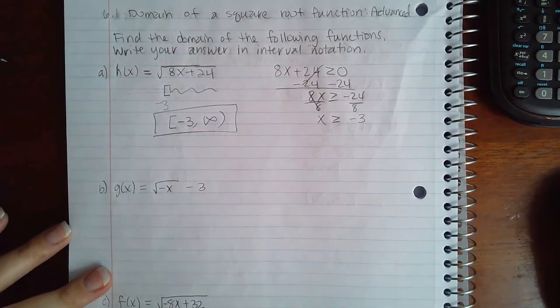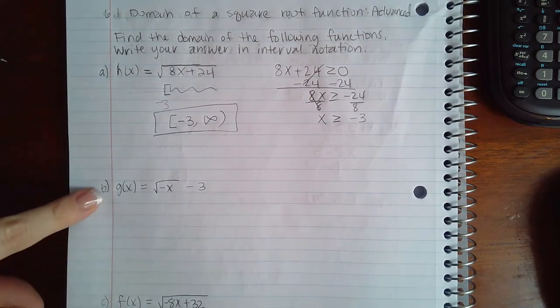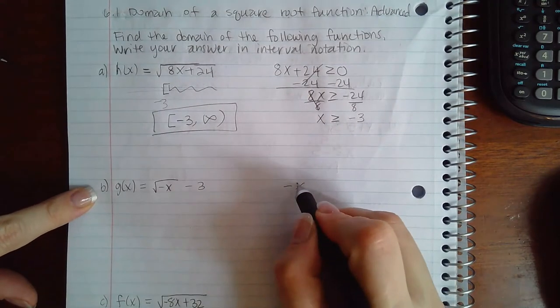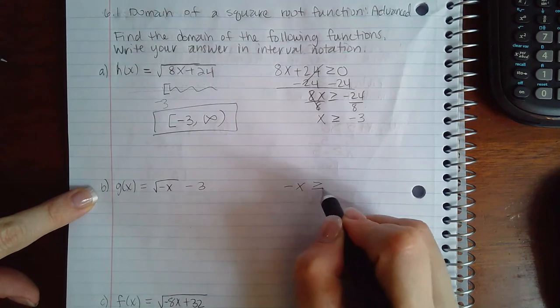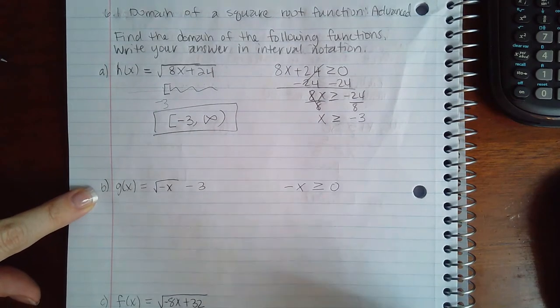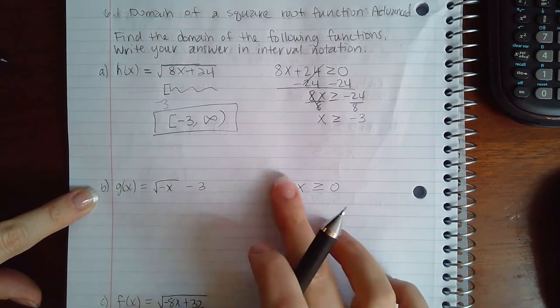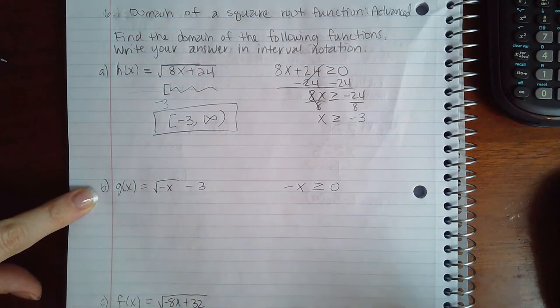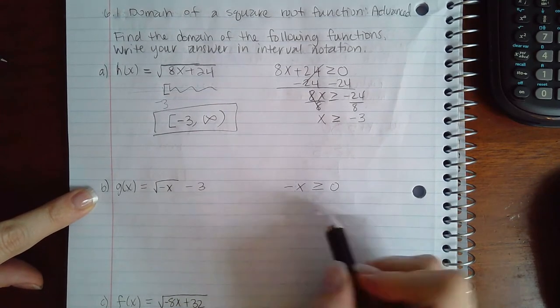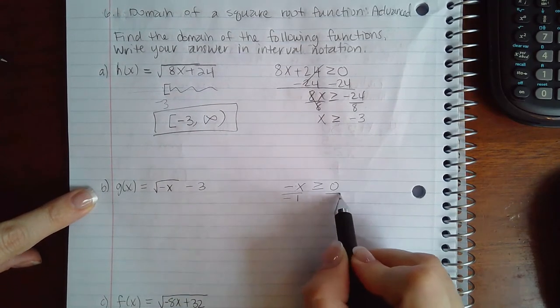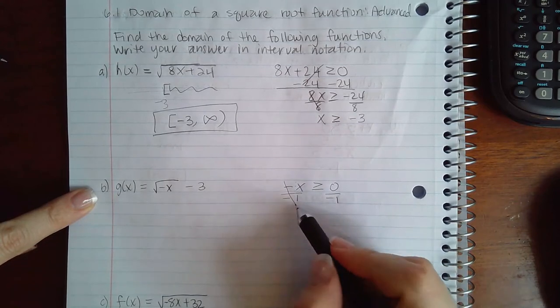Now let's look at b. Here I'm going to take what's inside the radical and set it greater than or equal to zero, but I do have a negative x because I have this coefficient in front. So what I'm going to do to get rid of that coefficient is divide both sides by negative 1.